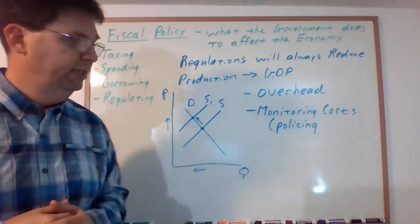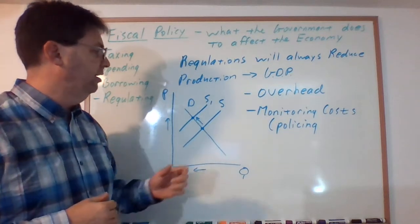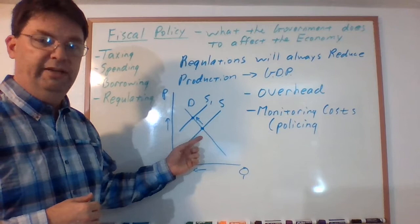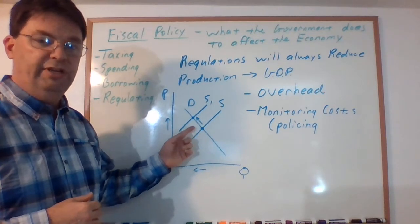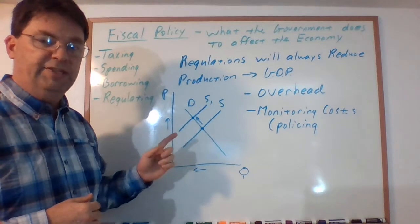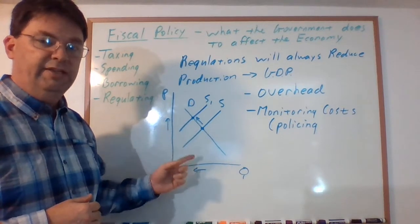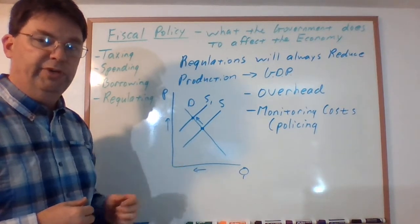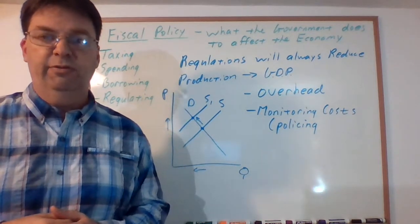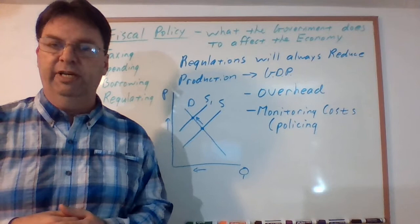As we can see here, you're going to have your normal supply and demand, and if you put a regulation on something it's going to move up to here. In doing so, that's going to increase the price and decrease the amount that's produced. It's just what regulations do. So you want to be very careful about what regulations you put on things and how big you let your government get.